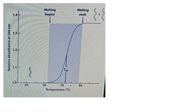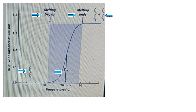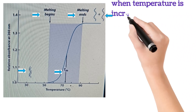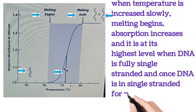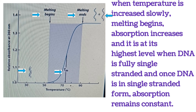Look at the figure on screen. This curve shows the absorbance of a DNA molecule at 260 nanometers versus temperature. At the beginning, DNA is fully double-stranded. When temperature is increased very slowly, DNA melting begins at about 55°C. As temperature increases, melting also increases. The Tm value, where 50 percent single-stranded and 50 percent double-stranded DNA is present, is at about 73 to 74°C. As temperature goes beyond Tm, melting ends and only single strands remain.